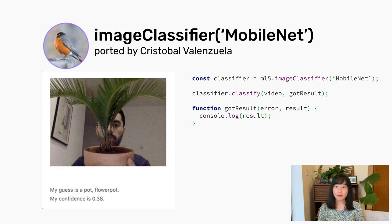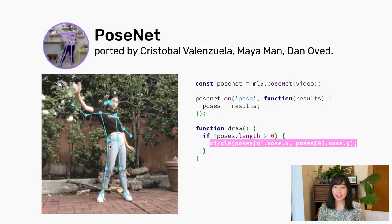Here is an example of a MobileNet object detection model running in the browser with just a few lines of code. Here is also an example of running PoseNet to detect human poses. MFI.js provides a friendly API to get access to more human-readable results and draw those results on the canvas with, for example, P5.js.